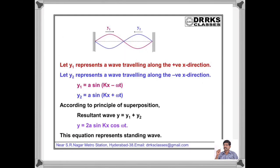Next, write the mathematical equation for a stationary wave. If y1 represents a wave traveling along the positive x direction and y2 represents a wave traveling along the negative x direction, the resultant stationary wave is y = y1 + y2, which gives y = 2a sin(kx) cos(ωt). Here, 2a sin(kx) is the amplitude of the stationary wave. This equation represents a stationary or standing wave.